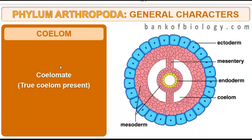Coelomate — true coelom is present. From the phylum Annelida onwards, every phylum has true coelom present. For example, we saw in Annelida, the true coelom was present. The phylum Arthropoda is also coelomate, meaning true coelom is present.